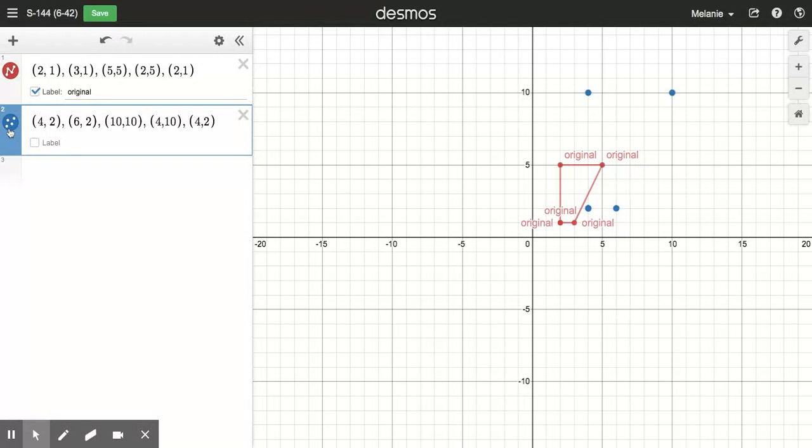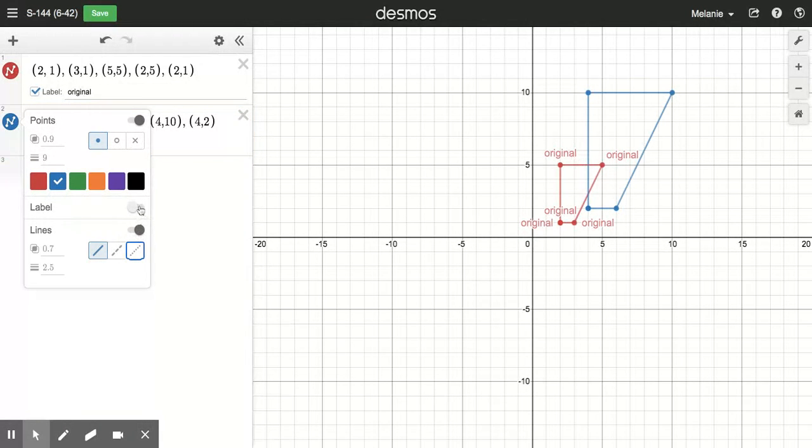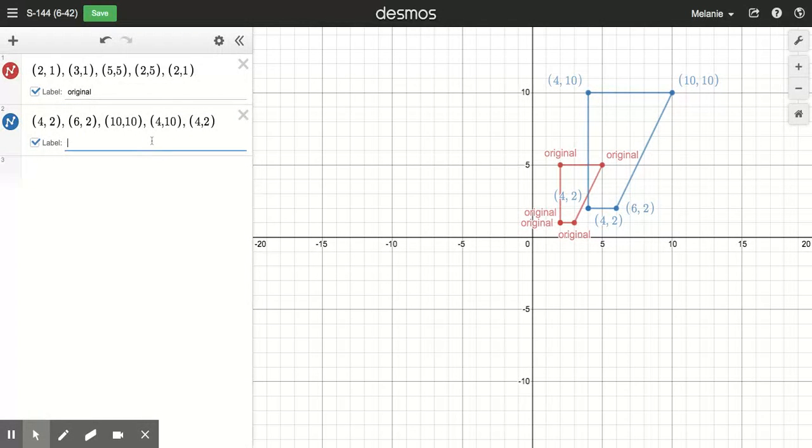You want to click on the blue icon there, click on the lines, and label it. Now we can see we'll label this multiply by 2. So we see the original one and the new one. That's how you're gonna use Desmos to plot your dilations.